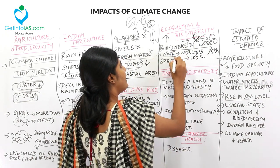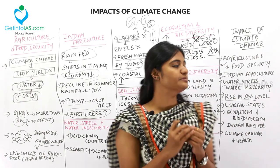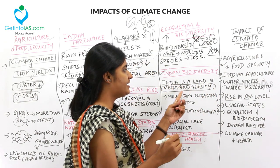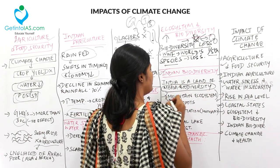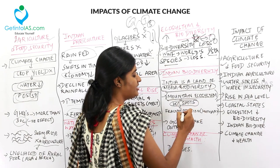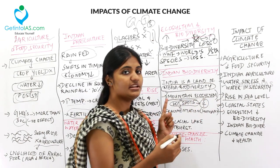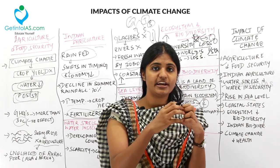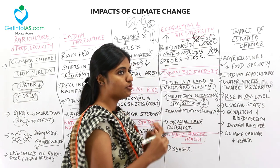The World Wildlife Fund has said that one-fifth of the world's species are under threat — in loss, endangered, or vulnerable conditions. Regarding Indian Biodiversity, India is a land of mega diversity and a tropical country. The mountain ecosystem is a very important hotspot, featuring species endemism. However, fragmentation of species habitats is happening in these hotspots due to human interaction.